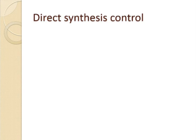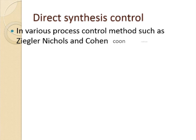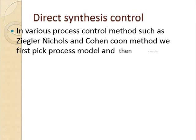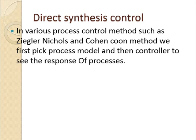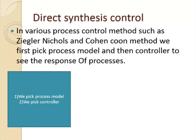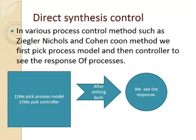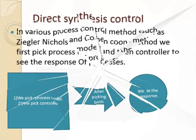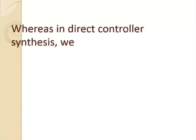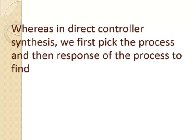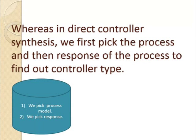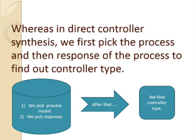In this various process control methods such as the Ziegler-Nichols and the Cohen-Coon method, we first pick the process model and then the controller to see the response of the process. We pick the process model and we pick the controller. After that, we find the controller type.